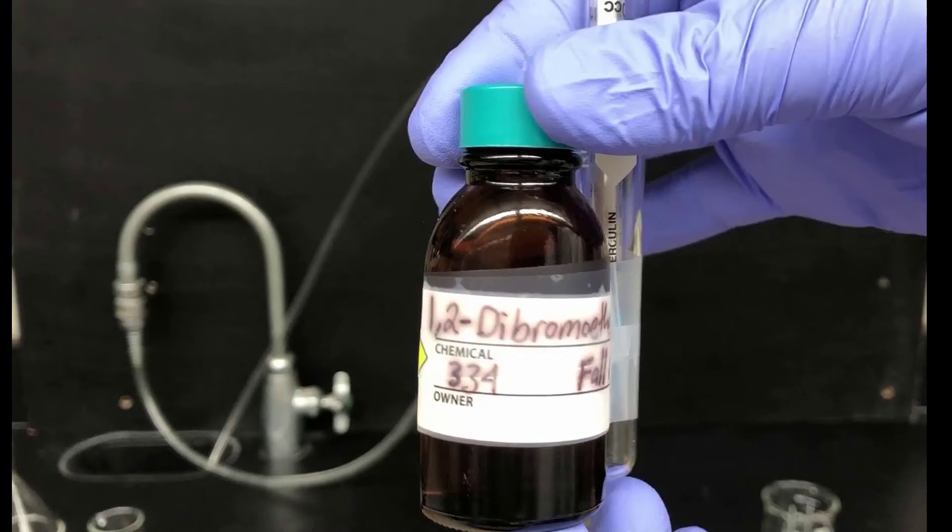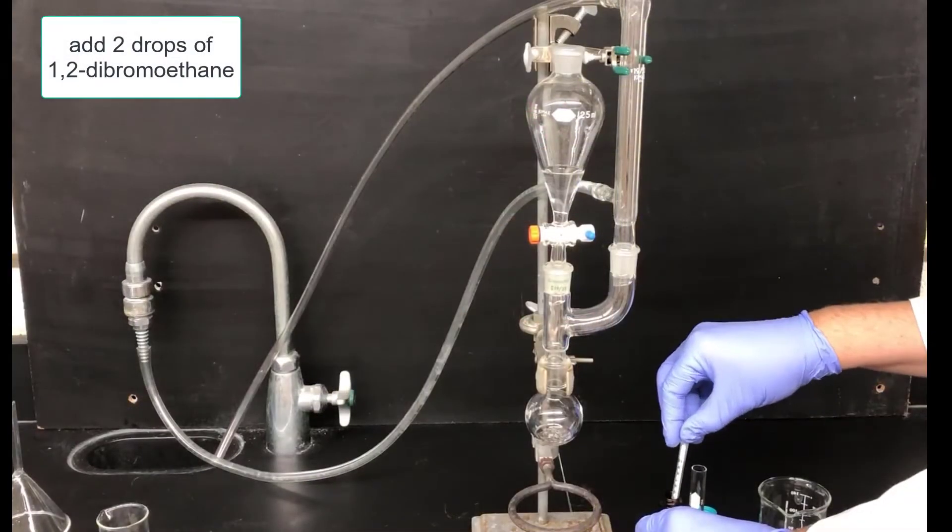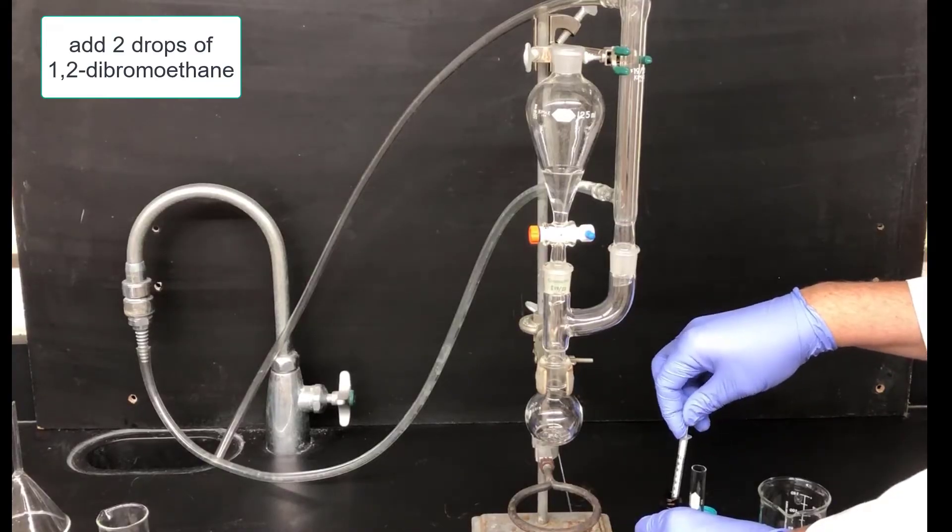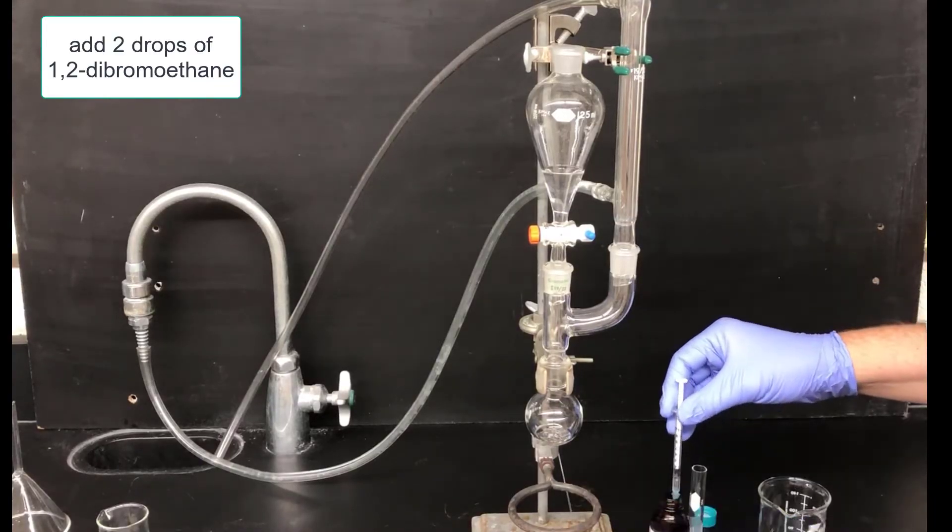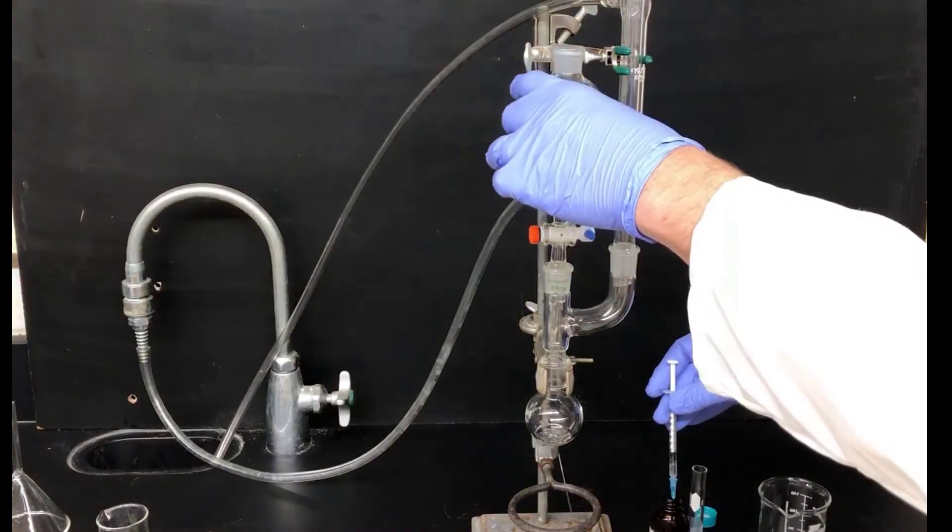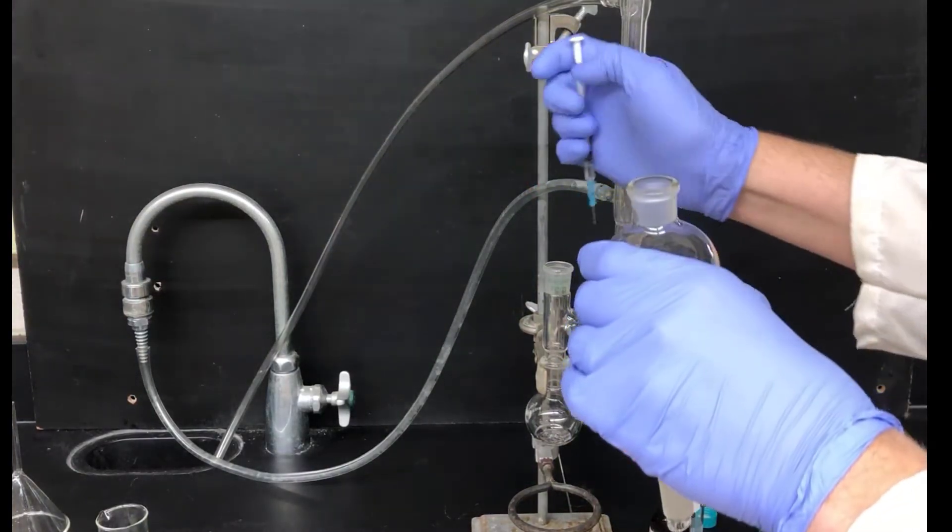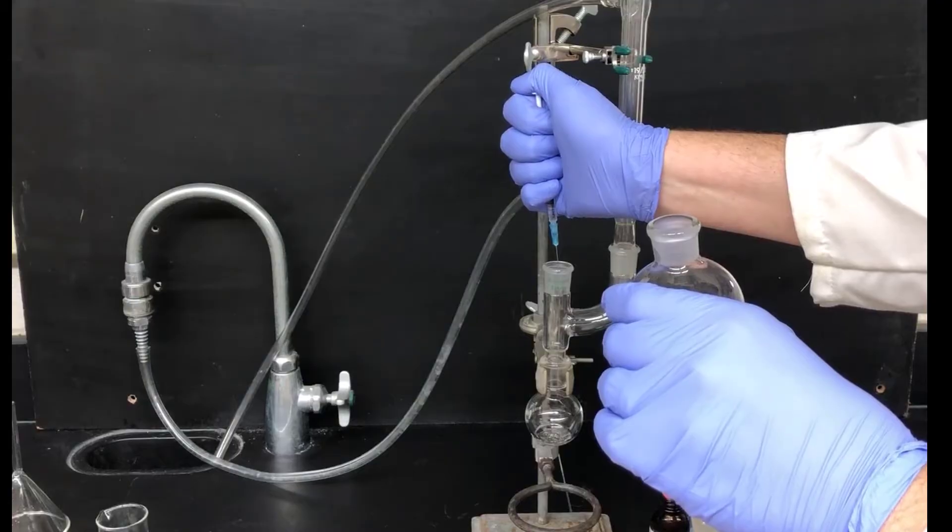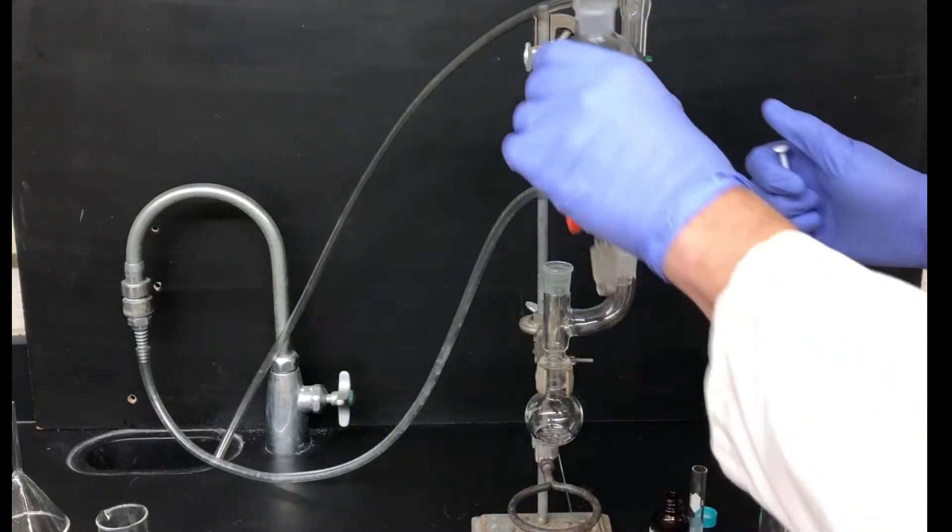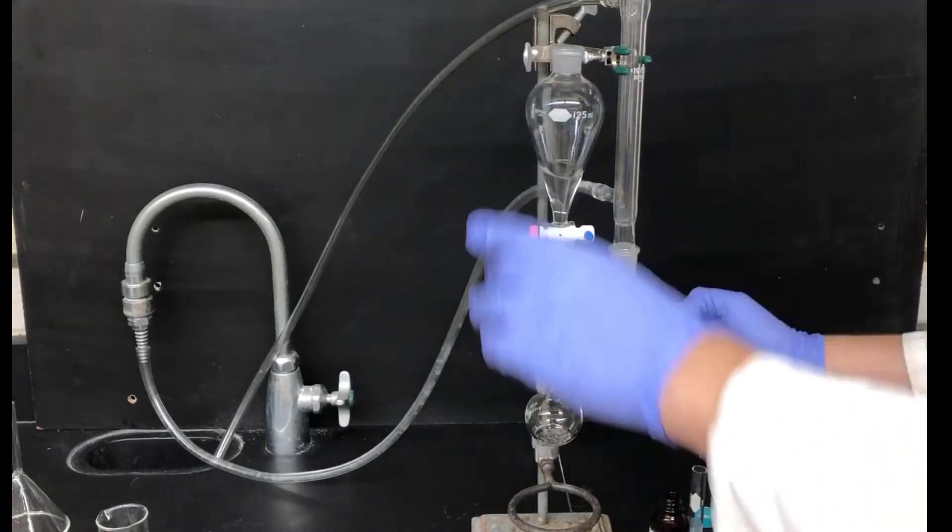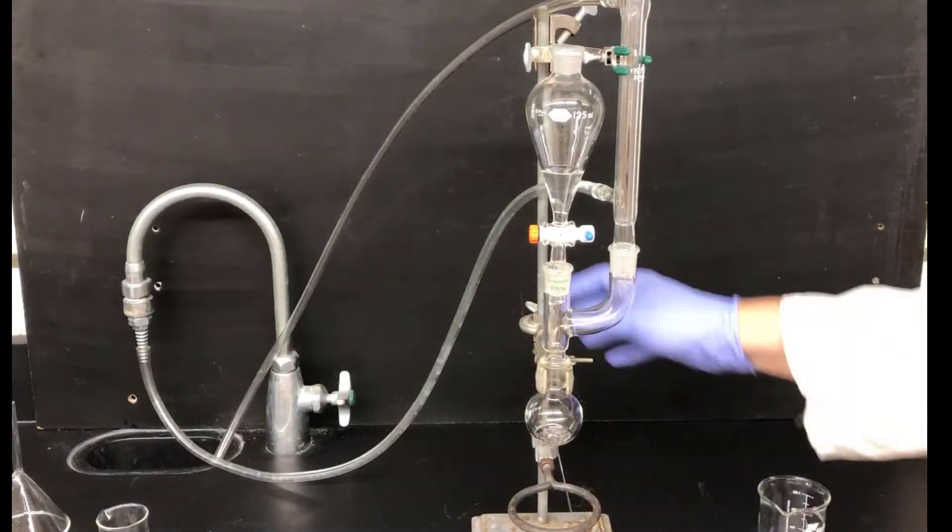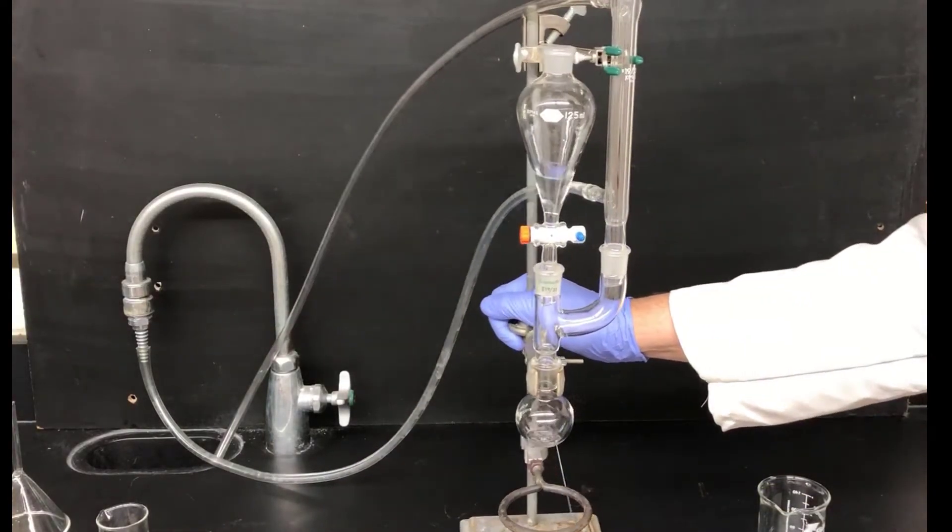To help initiate the formation of the Grignard reagent, I'll be adding two drops of 1,2-dibromoethane. This reagent reacts with magnesium metal, exposing fresh magnesium surface, allowing the Grignard reagent formation reaction to start more easily. I'll just remove the addition funnel temporarily, and add two drops of the 1,2-dibromoethane down the hole. Make sure that the drops actually fall into the solution and don't get hung up on the side of the glassware. Now I'm shaking the apparatus a little bit to stir everything up.